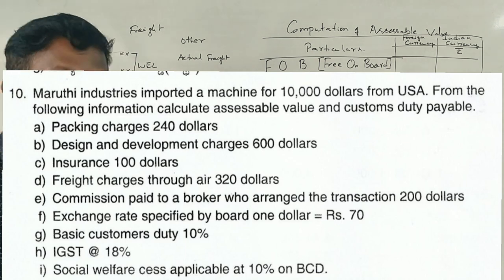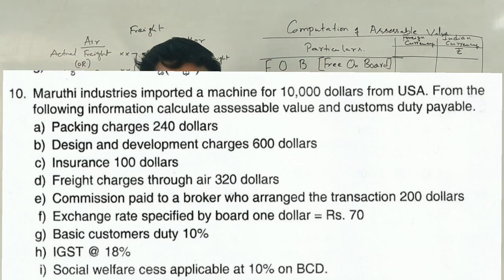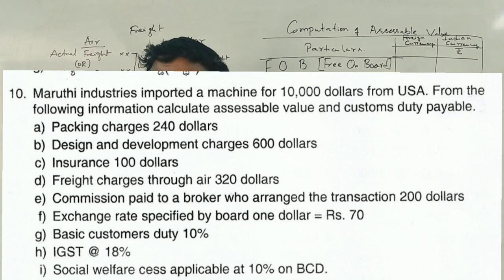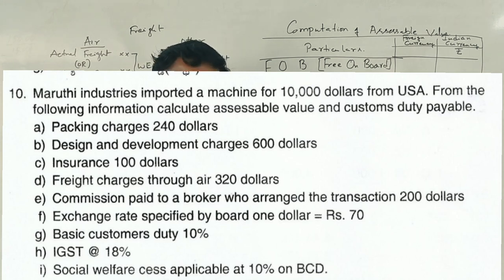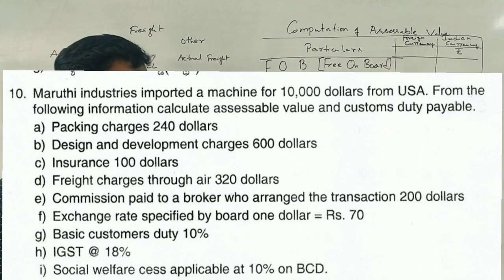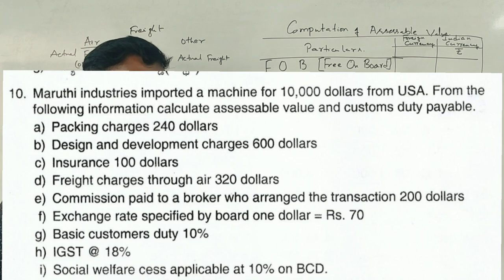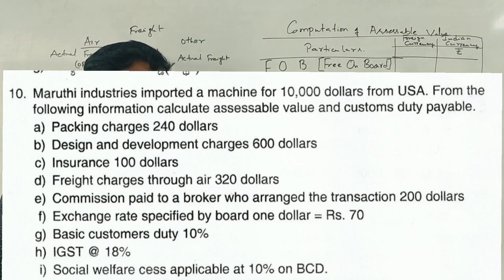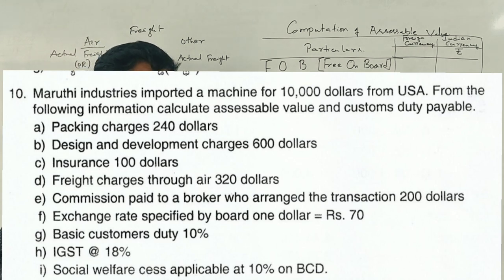Customs Duty, Business Taxation — 2020 Question Paper, 14 Marks Question. Marthi Industries imported a machine for $10,000 from USA. From the following information, calculate the Assessable Value and Customs Duty payable. Packing charges: $40. Design and Development charges: $600.